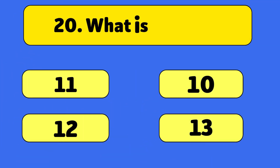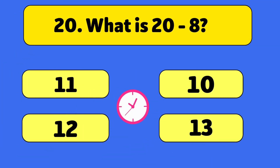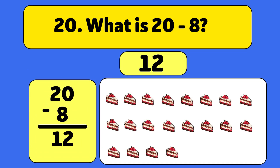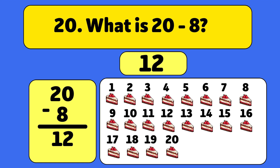What is 20 minus 8? The answer is 12. We start with 20 cakes and take away 8. Let's count: 1, 2, 3, 4, 5, 6, 7, 8. We have 12 cakes left.